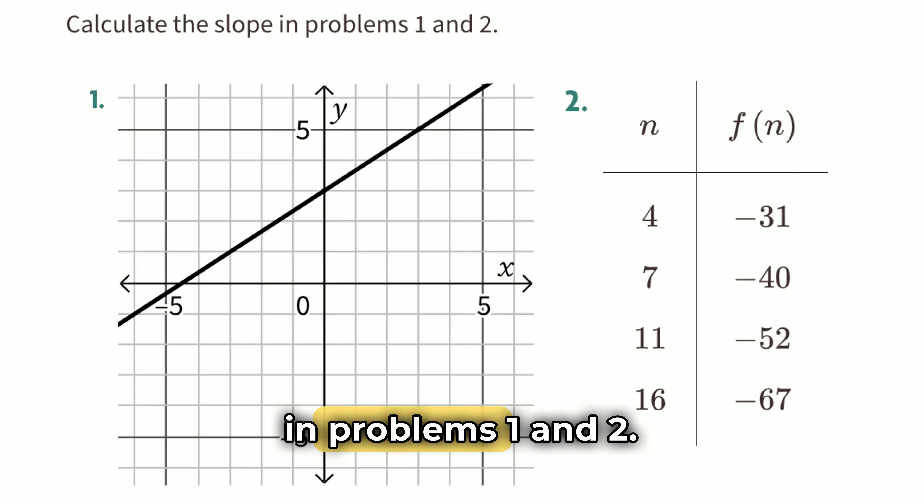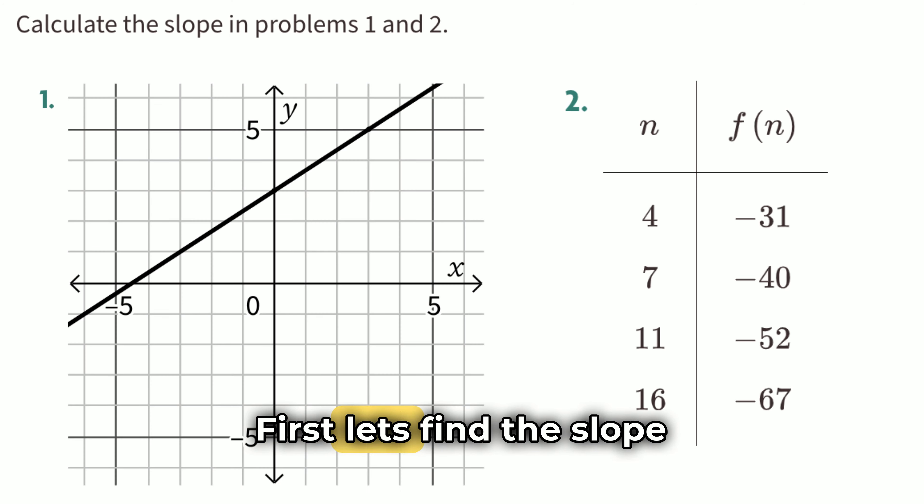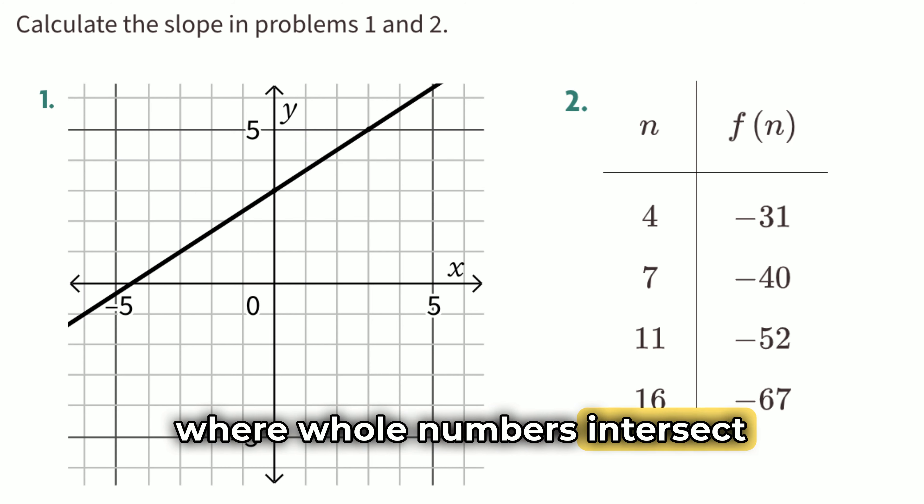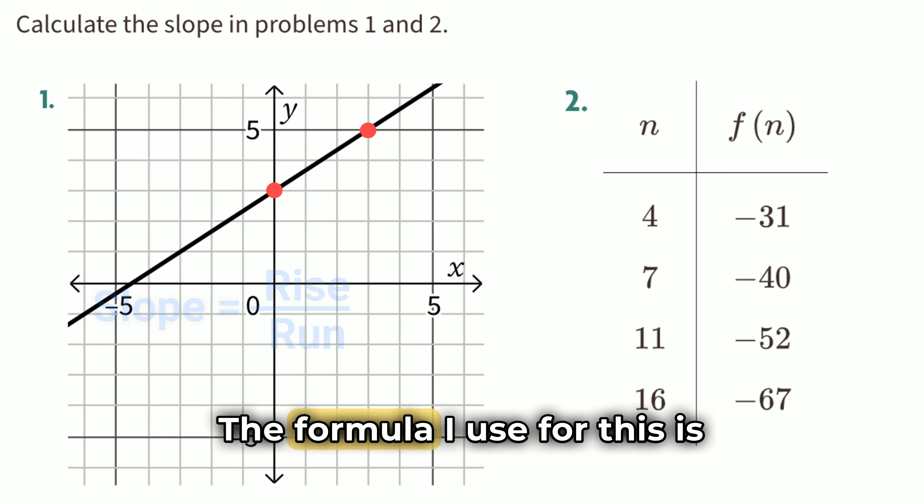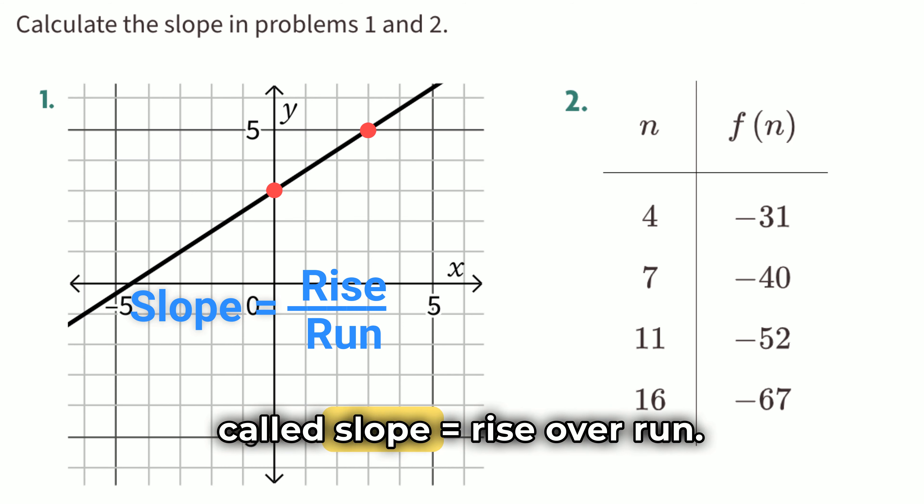Calculate the slope in Problems 1 and 2. First, let's find the slope of the line in the graph for number 1. It's easy to find the slope of a line if there are points located where whole numbers intersect, like these two points. The formula I use for this is called slope equals rise over run. Here's how it works.